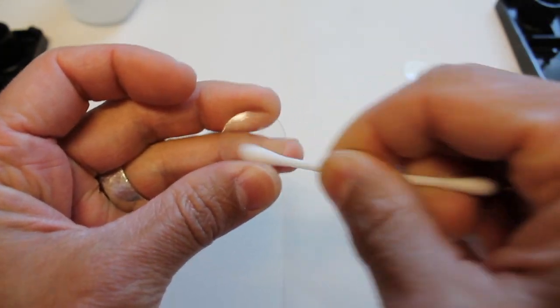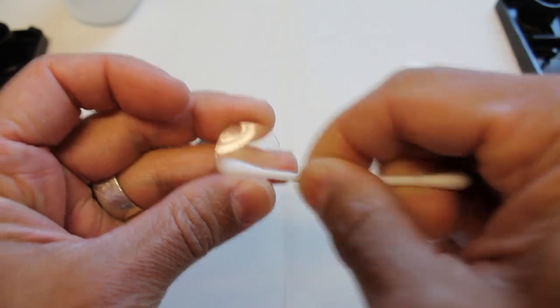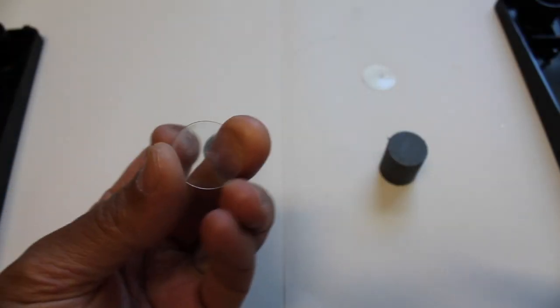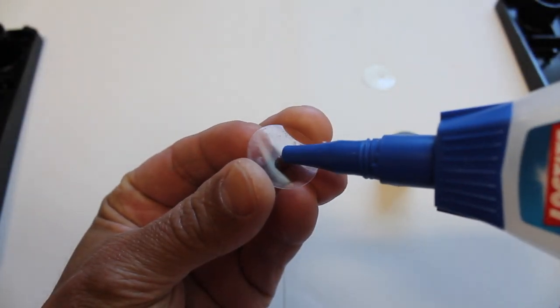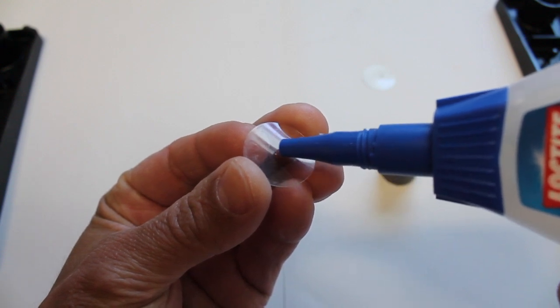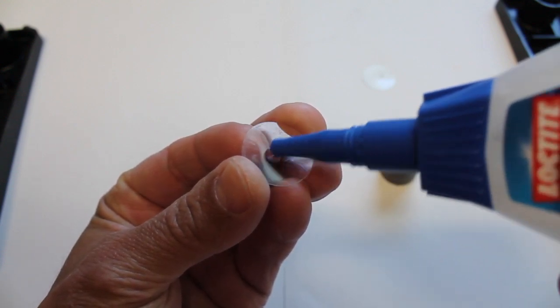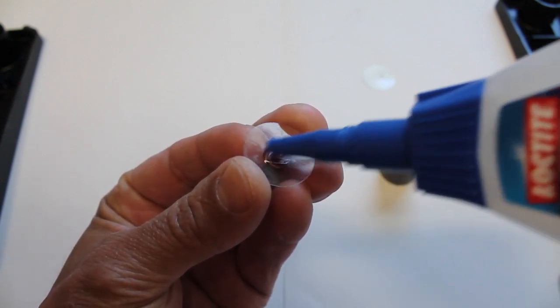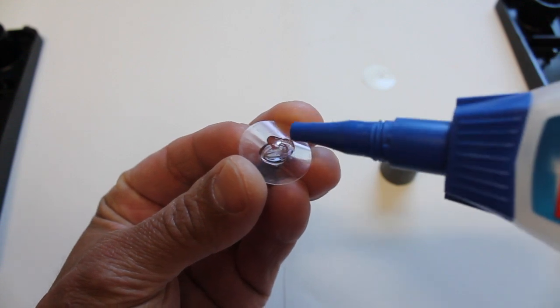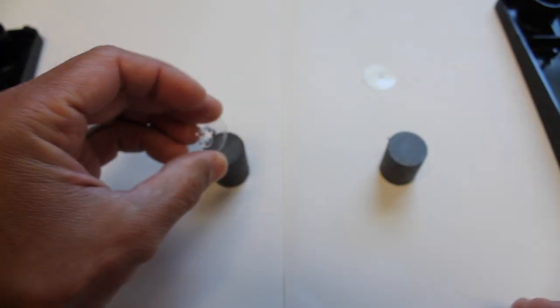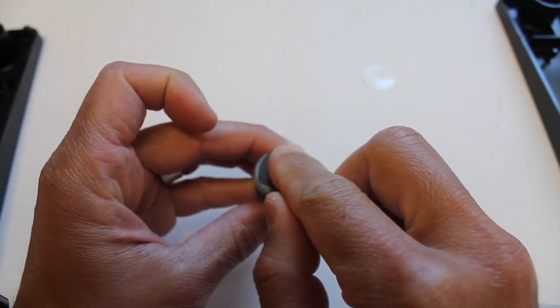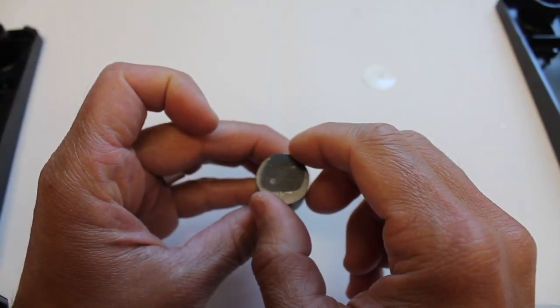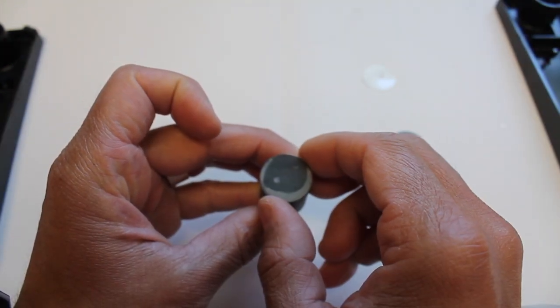I'm going to go ahead and put a little bit of glue on our disc. Now it's recommended to use CA glue, like medium thickness. This is just some general-purpose super glue that I have, so hopefully that should do the trick.